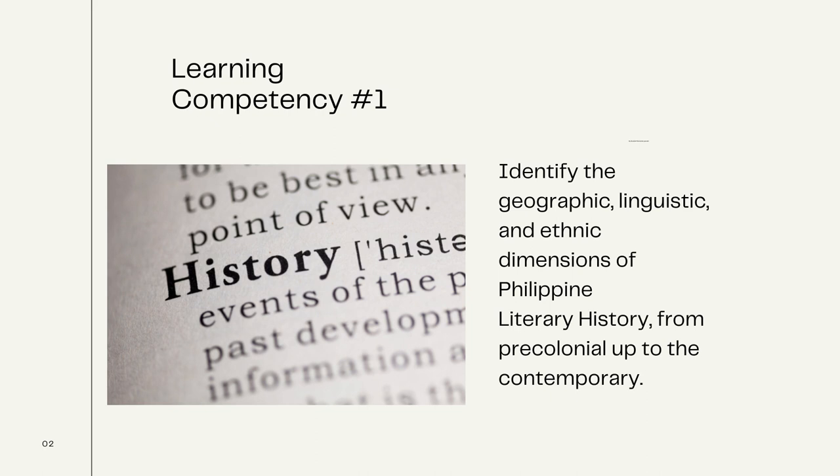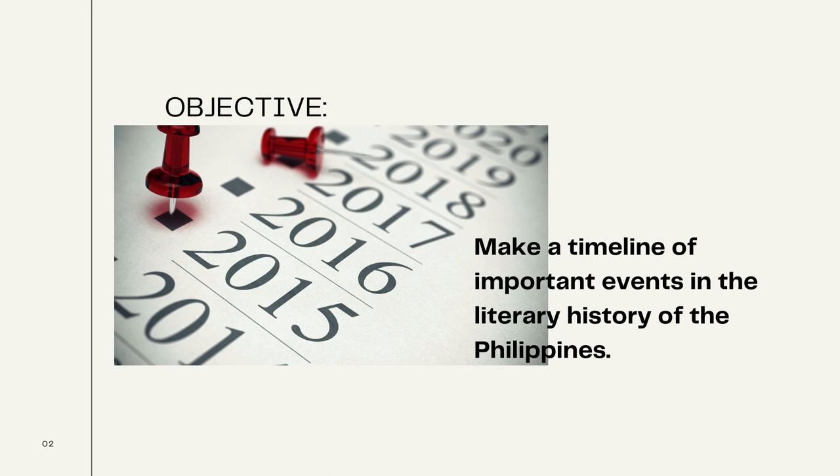Let me share with you the learning competency for this session: identify the linguistic, geographic, and ethnic dimensions of Philippine literary history from pre-colonial up to the contemporary. In line with this, your task is to make a timeline of important events in the literary history of the Philippines. If you notice, there are five important concepts that we need to understand first before we can move on to our main lesson.